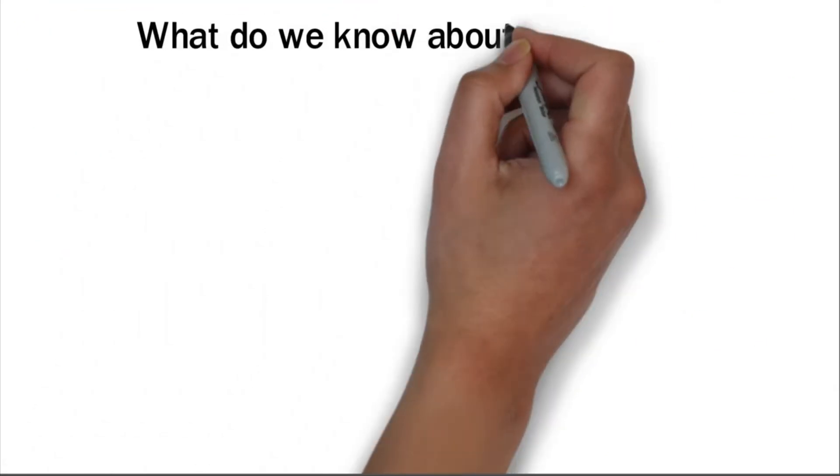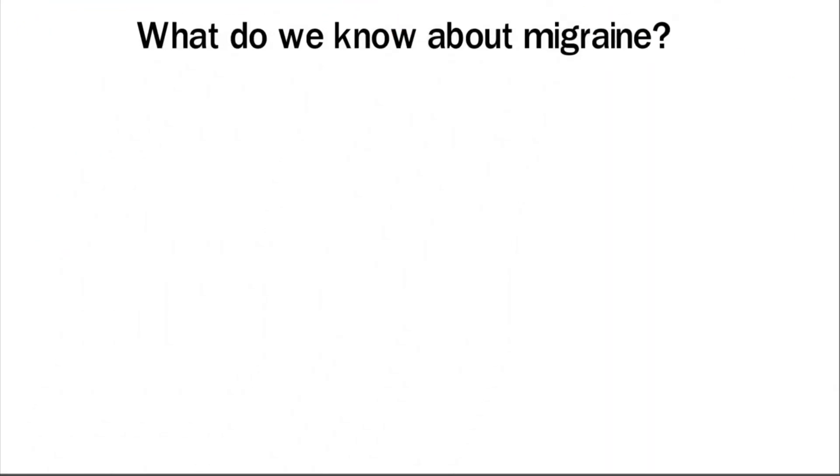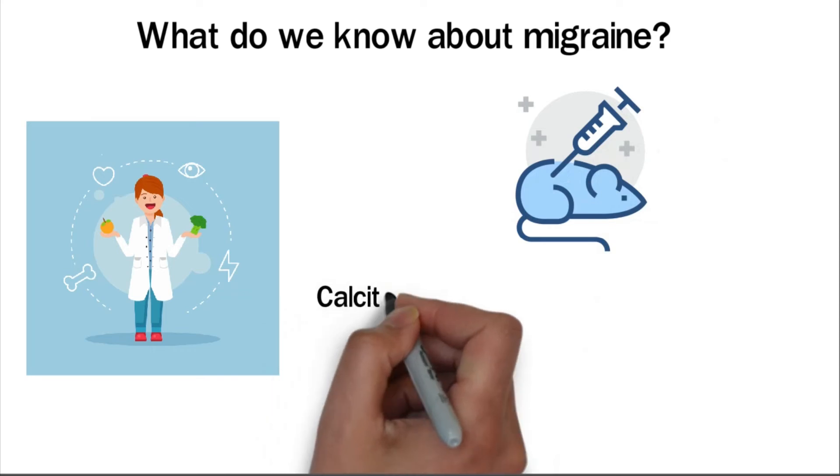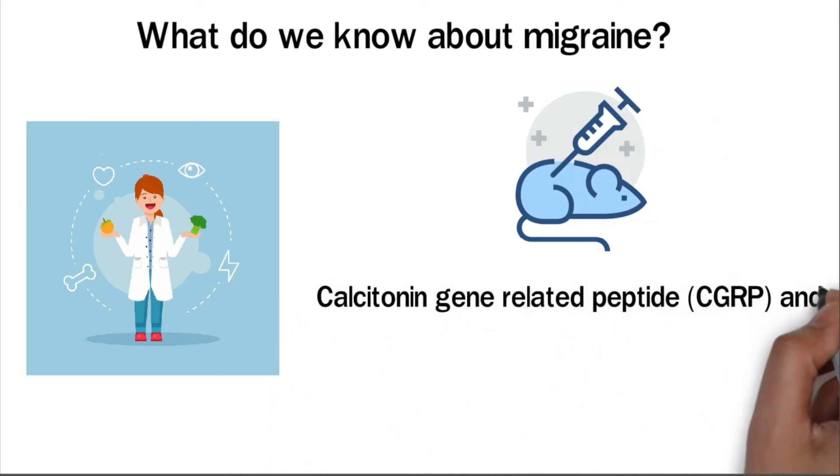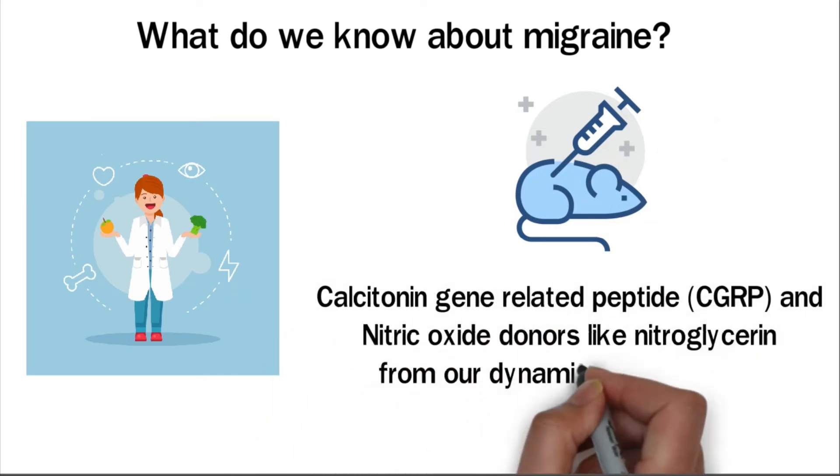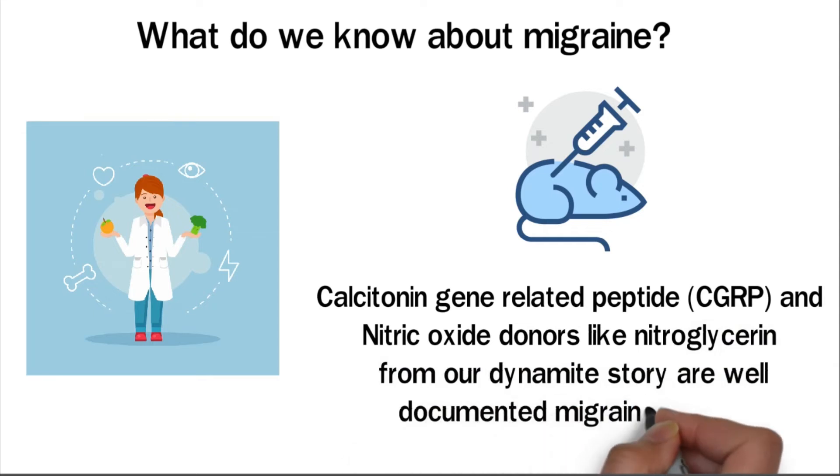So what do we know about migraines? Migraines are best treated preventatively through a combination of healthy lifestyle choices such as proper sleep and nutrition. Animal studies have shown us that calcitonin gene-related peptide, CGRP, and nitric oxide donors, like nitroglycerin from our dynamite story, are well-documented migraine triggers.